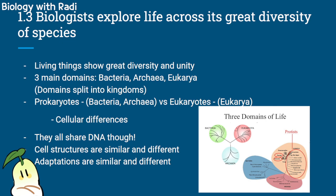Biologists explore life across its great diversity of species. Living things show great diversity and unity. There are three main domains of life: bacteria, archaea, and eukarya. Domains split into kingdoms — for example, the plant kingdom is part of the eukarya domain. Domains are distinguished based on core differences, which we usually compare at the cell level. Prokaryotes and eukaryotes are the two cell types, and prokaryotes used to be the ancestor of eukaryotes — so eukaryotes developed after prokaryotes.